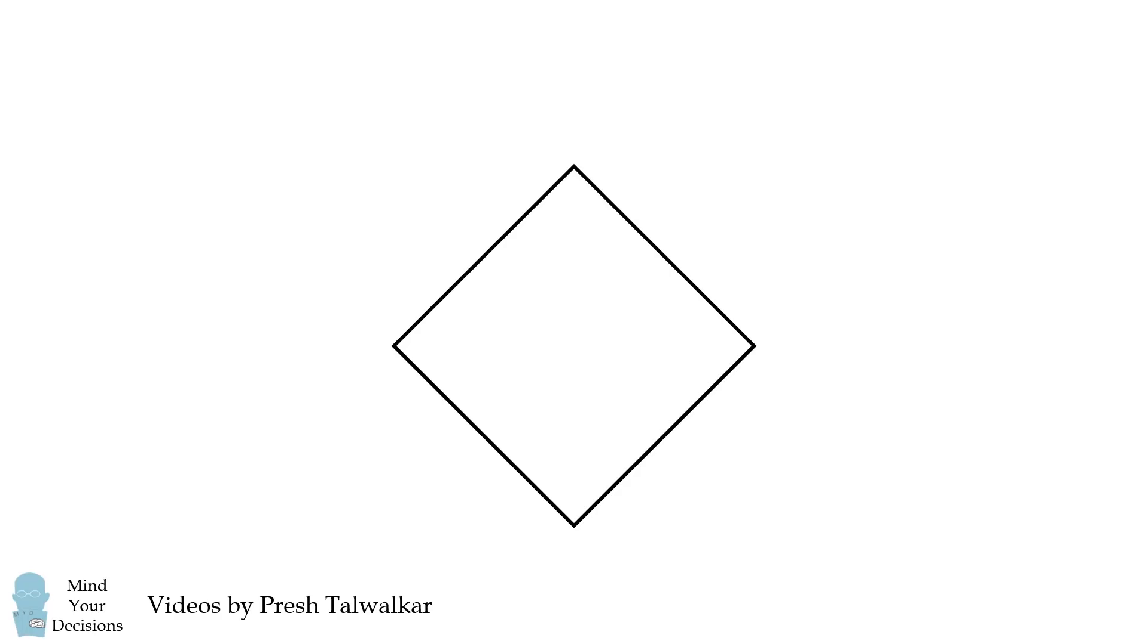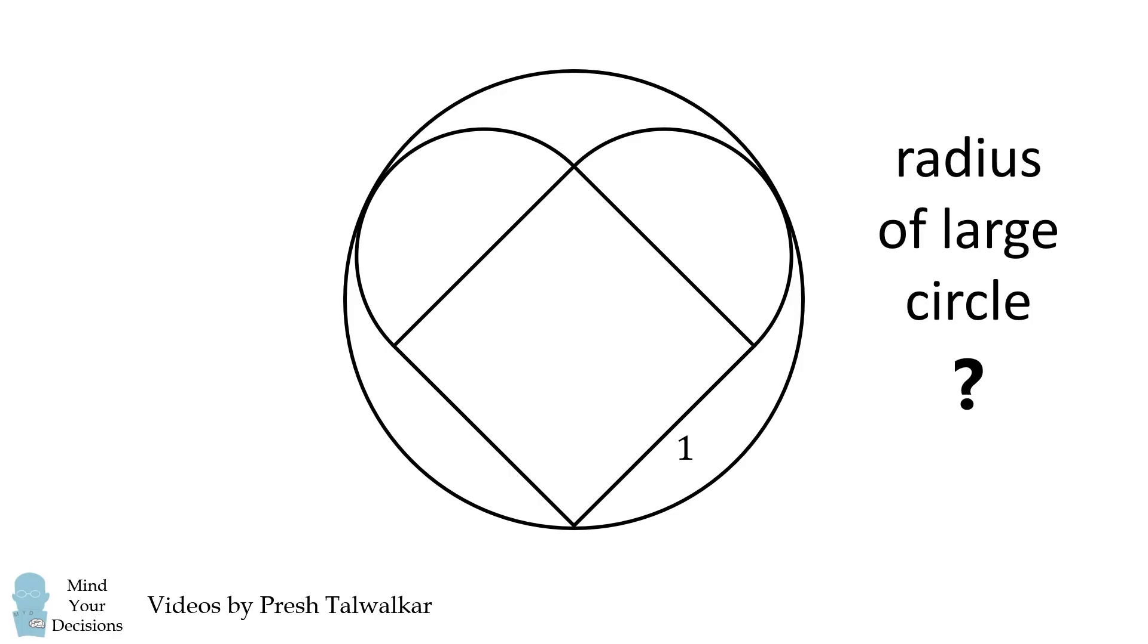Start with a square whose side lengths are equal to 1. On two adjacent sides, construct semicircles to form a heart shape. The final step of the construction is to circumscribe a circle around the heart. The question is what is the radius of the large circle? I thank Stephen from Belgium for the suggestion.